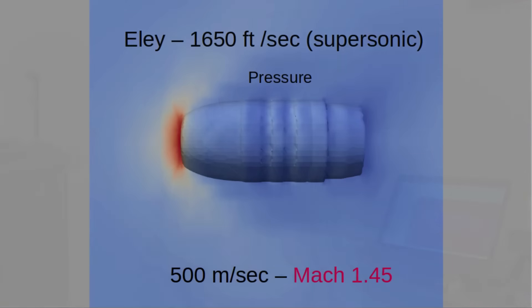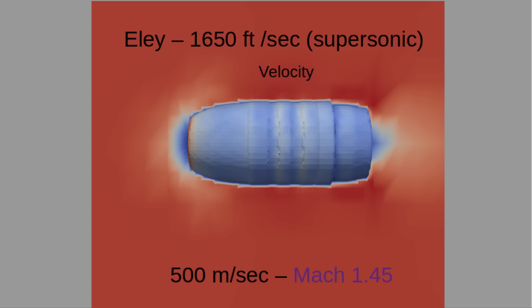Now imagine we shot this bullet at Mach 1.45 — sixteen hundred and fifty feet per second. Things are a lot more dynamic here. There's a very high pressure region right in front of the bullet which extends away from the front and also off to the sides, because we're starting to create shock waves. It's a little easier to see when you look at the velocity of the air — there's decelerated air right in front of the bullet and a little behind it as well, but the effects on velocity extend away from the bullet. Those are shock waves being created as our bullet crashes through at more than the speed of sound.